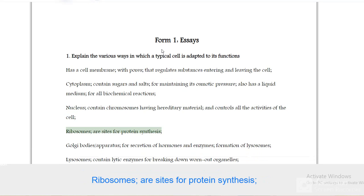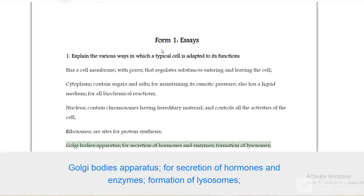Ribosomes are sites for protein synthesis. Golgi bodies apparatus for secretion of hormones and enzymes, formation of lysosomes.